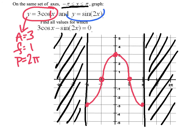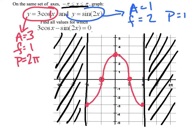Now for the sine curve sin(2x): amplitude is 1, frequency is 2, and period is π. I see one complete cycle from 0 to π — starting with a root, ending with a root, another root halfway between, a max in the first half, and a min in the second half. Then using the cyclic, repetitive nature of the curve, on the negative side from 0 to negative π, the curve goes to a min, a root, a max, and another root.